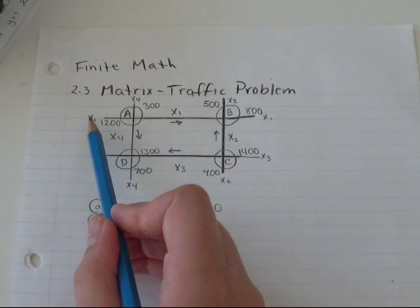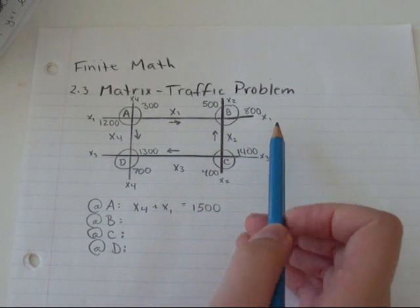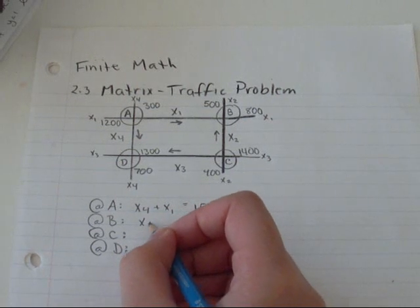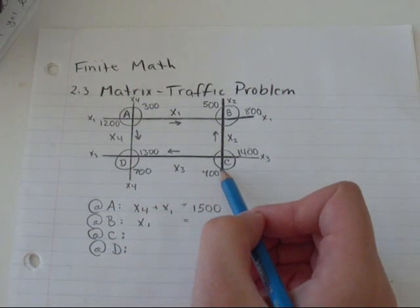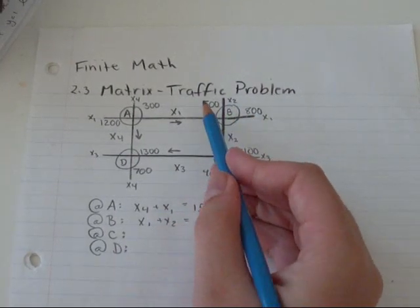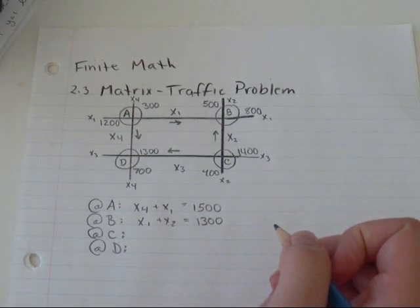At B I'm dealing with cars traveling this way and there's 800 of them. So that's X1 and cars traveling this way along X2 and there's 500 of them. So 800 and 500 is going to be 1300 cars in that intersection.